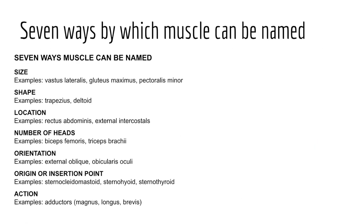Naming muscles is a key concept in gross anatomy. We can look at seven common ways muscles can be named. First, muscles may be named by size, using terms such as vastus, maximus, minimus, longus, and brevis — all size-based muscle terminology.